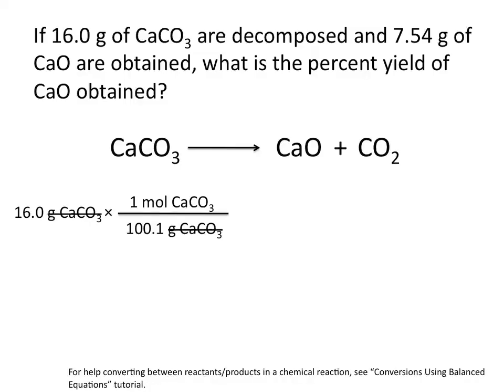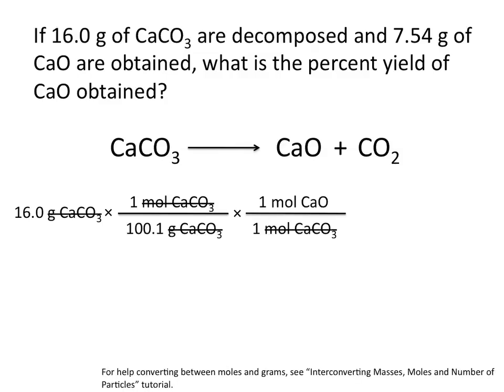Now that we have moles of calcium carbonate, we can convert to moles of calcium oxide using the coefficients in our balanced chemical equation. And this is why it's very important to check that your equation is balanced. In this case, one mole of calcium carbonate will give us one mole of calcium oxide. This allows us to cancel out moles of calcium carbonate and leaves us in moles of calcium oxide.